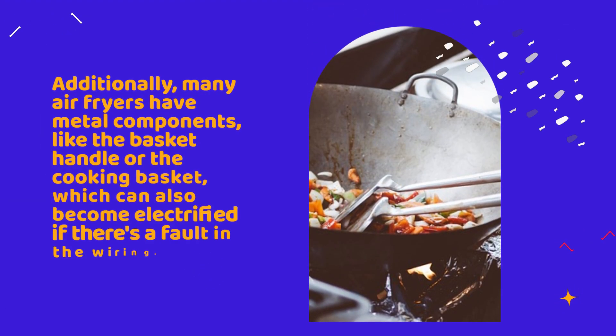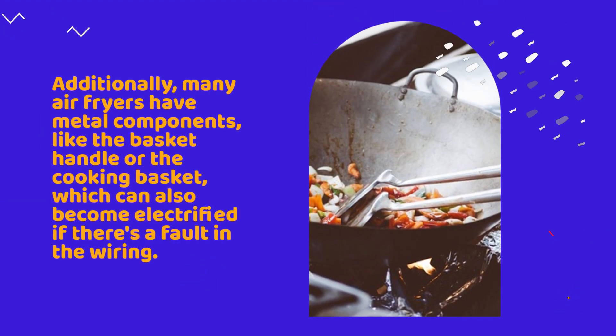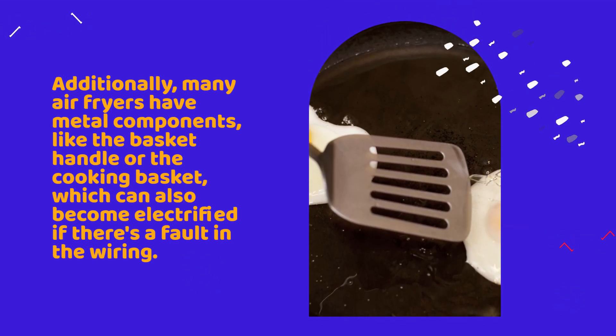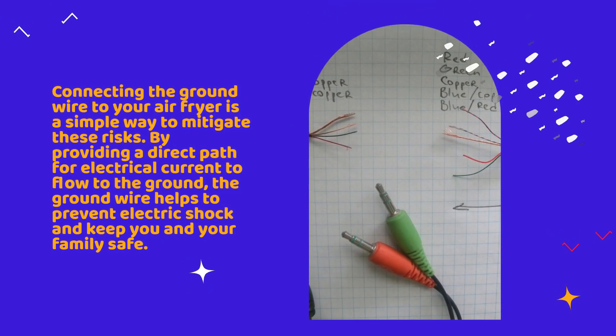Connecting the ground wire to your air fryer is a simple way to mitigate these risks. By providing a direct path for electrical current to flow to the ground, the ground wire helps to prevent electric shock and keeps you and your family safe.